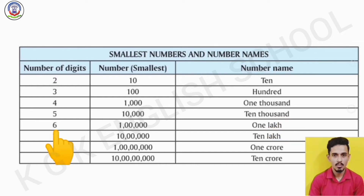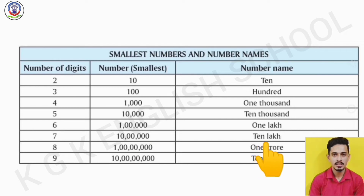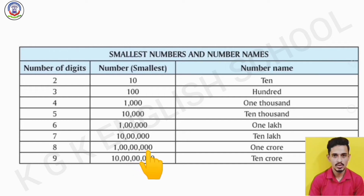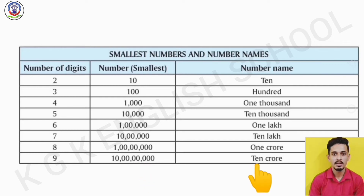In 6-digit numbers, the smallest number is 1 followed by five 0's and its number name is 1,00,000. In 7-digit numbers, the smallest number is 1 followed by six 0's and its number name is 10,00,000. In 8-digit numbers, the smallest number is 1 followed by seven 0's and its number name is 1 crore. In 9-digit numbers, the smallest number is 1 followed by eight 0's and its number name is 10 crore.